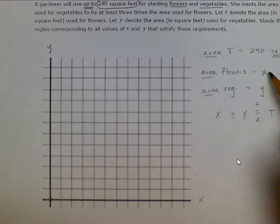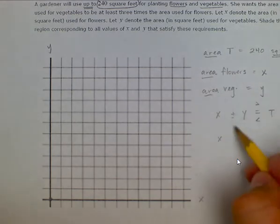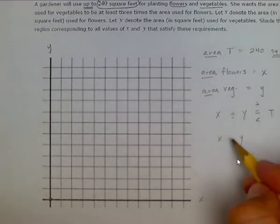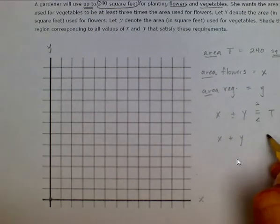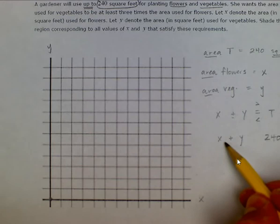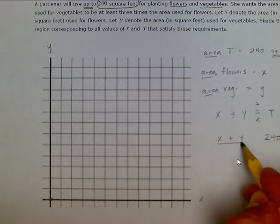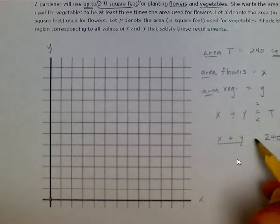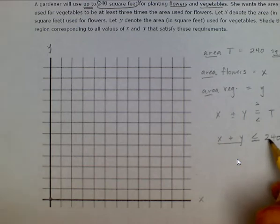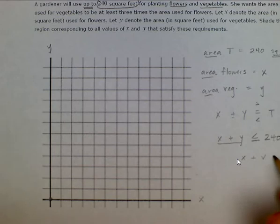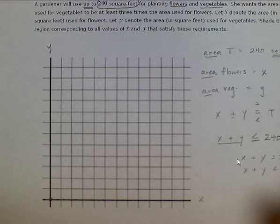So x represents flowers and y represents vegetables. We add them together to get up to 240 square feet. The gardener is willing to use up to 240 square feet, meaning she's not willing to use more than that. So the area for flowers plus the area for vegetables can equal 240 square feet, or it can be less than 240 square feet. Either way is fine as long as she doesn't go above 240.